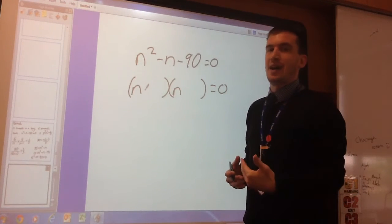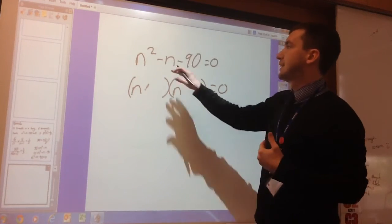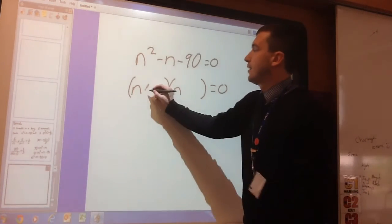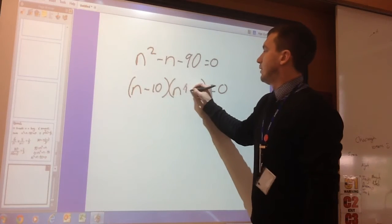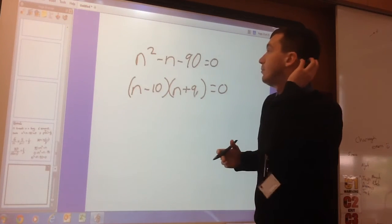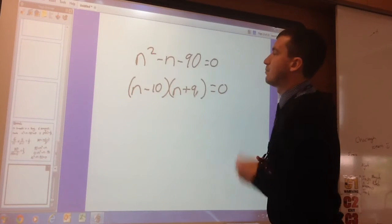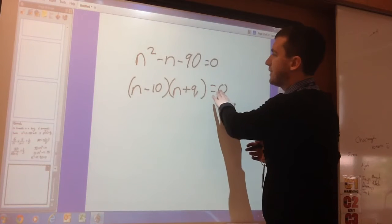Those two numbers are 10 and 9. So 10 and 9 is 90. Can I use those numbers to get negative 1? Yes, I can. Negative 10, add 9. That's going to give me negative 1. But we've not finished yet. The answers are not negative 10 and positive 9. Because we need it to be equal to zero.